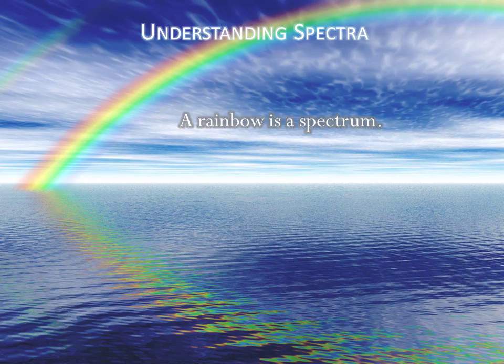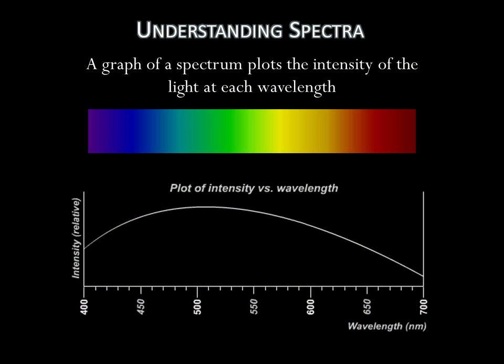If we wanted to analyze the sun's light from its spectrum, we could put the light through a prism and study the resulting rainbow. But it makes more sense to display the spectrum as a graph. A graph of a spectrum plots the intensity of light at each wavelength. The process of obtaining a spectrum and reading the information it contains is called spectroscopy.